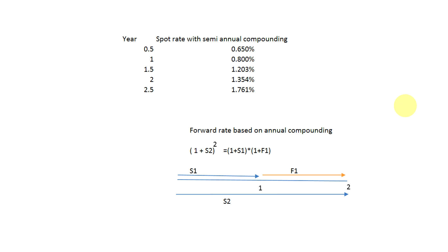We are going to quickly have a look at how to calculate forward rates based on spot rates. These are spot rates with semi-annual compounding, so you can see we have spot rates up to two and a half years. In this session we are going to go through and see how we can calculate the six-month forward rates up to two and a half years with semi-annual compounding. First, let's understand the basic logic of how spot rates and forward rates are related to each other.